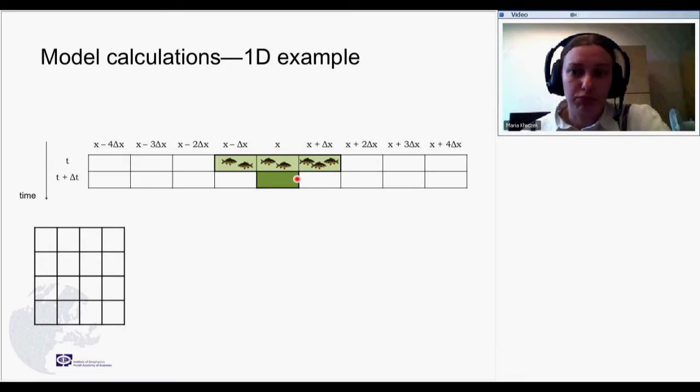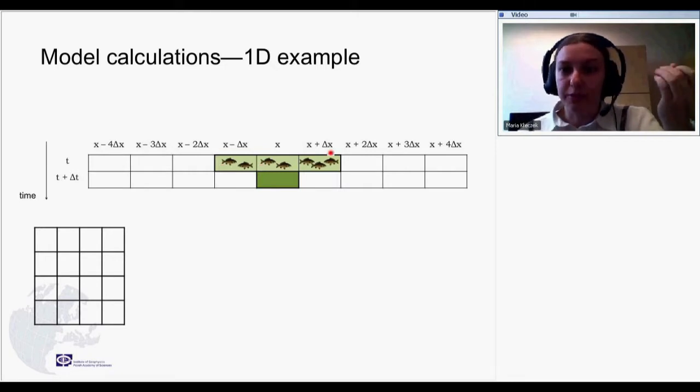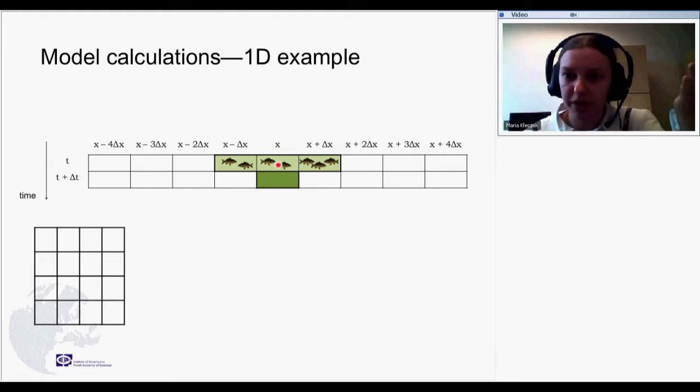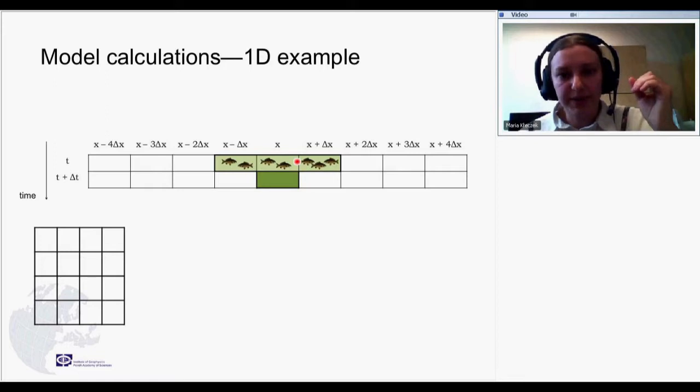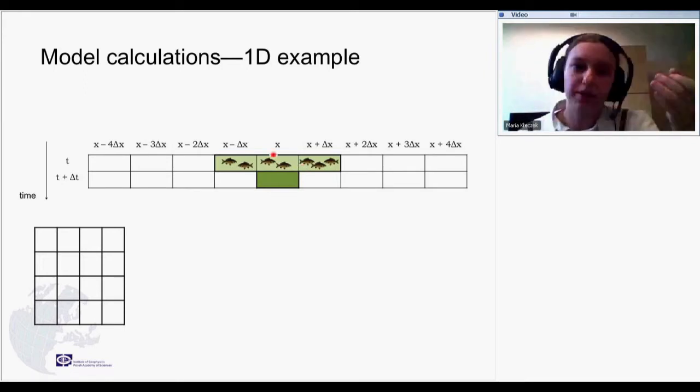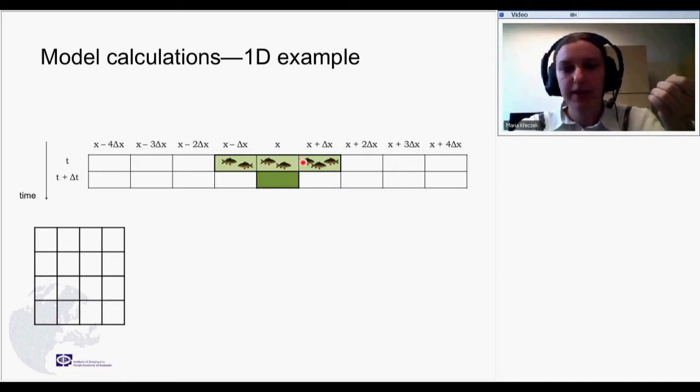So what do we need to calculate the number of fish in this grid point in the next time step? We definitely need to know the rules, of course, the rules that govern changes in the system. But we also need to know how many fish were here in this very grid point in the previous time step. That's quite obvious, but this is not enough because the fish can be moving. So we also need to know how many fish were in this previous time step in the neighboring grid points, because they can move from here to here and from here to here. And if we know that, if we know numbers of fish here, using our equations, we know their velocities also, they can be moving in one direction or another. And we can calculate the number of fish that will be in the next time step in our grid point.